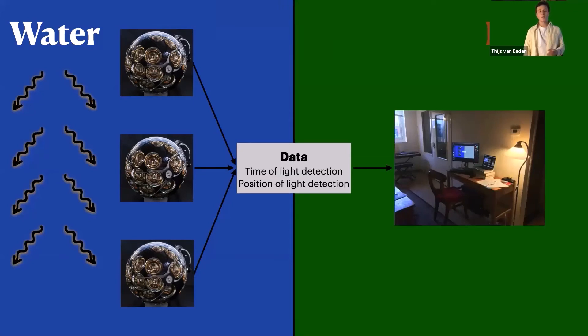Here I work on algorithms that translate this data, translate these light patterns to the direction of the particle that produced it. It's important that this is done very efficiently because we get tons and tons of data from the sea. And secondly, we need to make this translation as good as possible because the better we determine the direction of the particle, the better we can determine its origin.